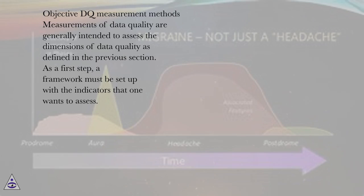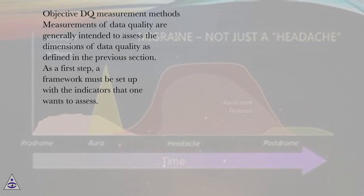Objective DQ measurement methods. Measurements of data quality are generally intended to assess the dimensions of data quality as defined in the previous section. As a first step, a framework must be set up with the indicators that one wants to assess.